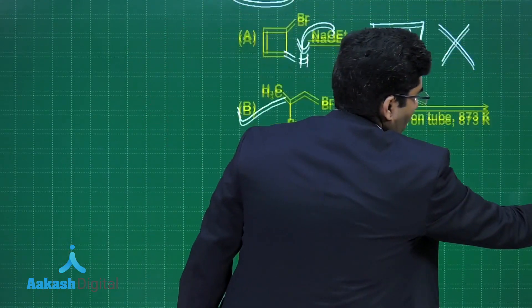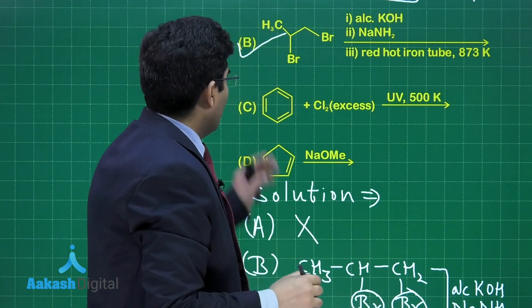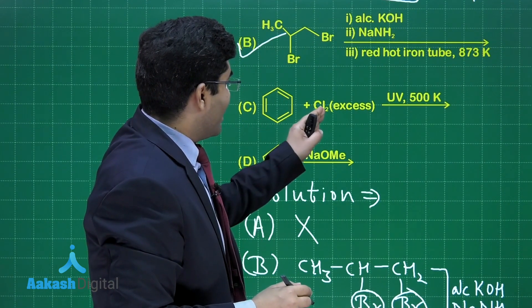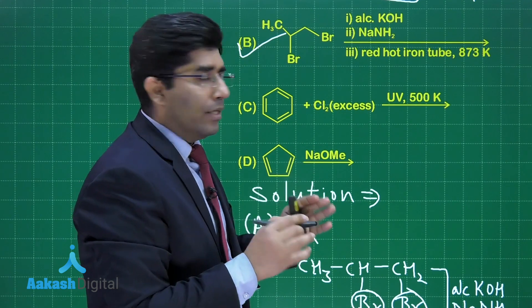So this is the correct option. B is the correct option. If you talk about the next one, benzene is reacting with chlorine in excess and in the presence of light.